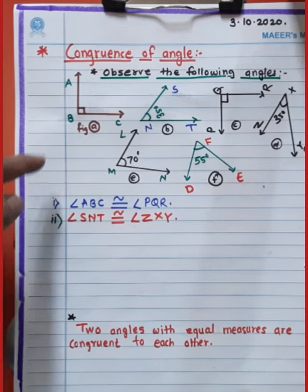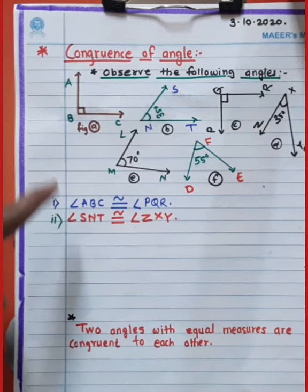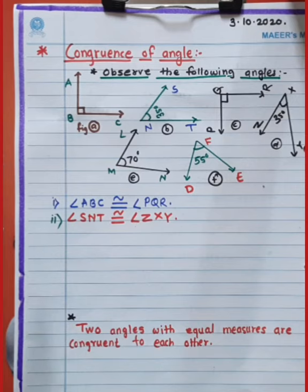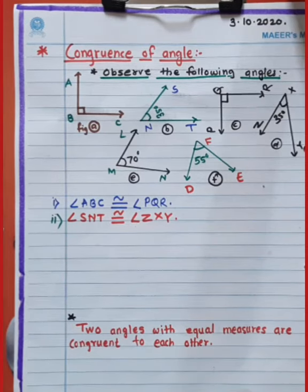Only these two pairs of angles are congruent to each other in this figure. Do you understand, students, what is meant by congruence of angle? Thank you.